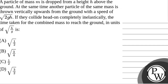Hello. Let's read the question. A particle of mass m is dropped from a height h above the ground. At the same time, another particle of the same mass is thrown vertically upwards from the ground with a speed of root 2gh. If they collide head-on completely inelastically, the time taken for the combined mass to reach the ground in units of root(h/g) is?